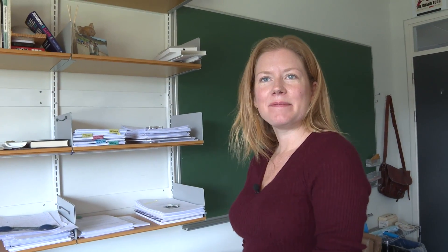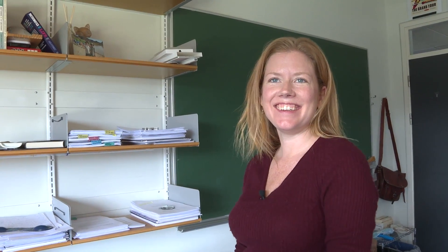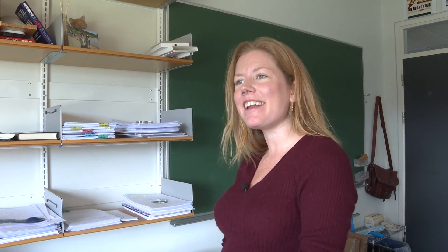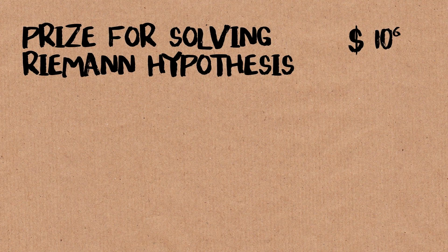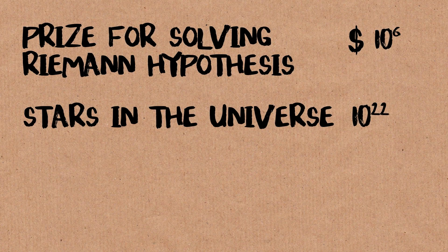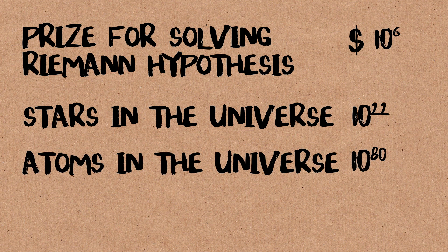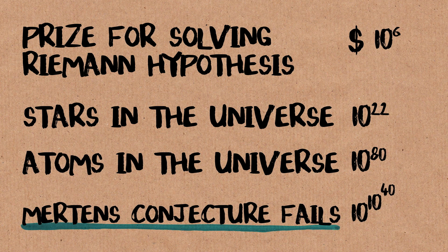There's some number floating out there when the rule first gets broken, but we can never even write it down. We can never even arrange all of the atoms in the universe to describe it — it can never be lined up in any computable way. But we know it's there. It's finite, it's an exact number. The only way we can describe it is as the first number that fails Mertens conjecture.